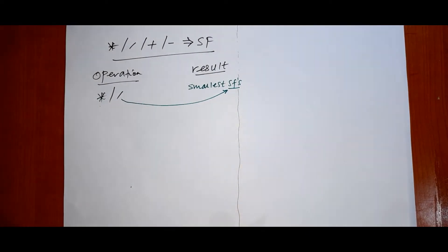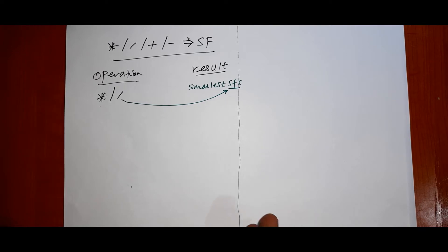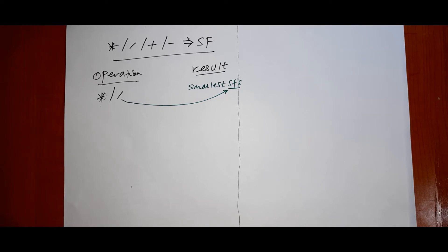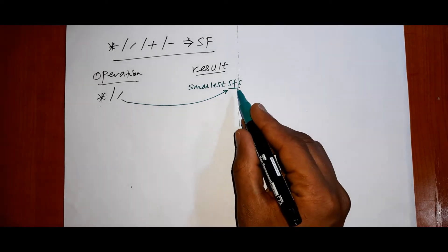For multiplication and division, the result is always related to the fewest significant figures. Consider the difference: if you have factors with different numbers of significant figures, the result must match the one with the fewest.